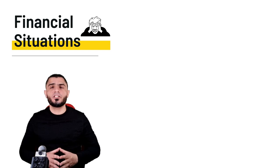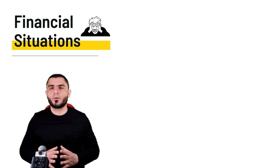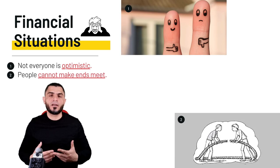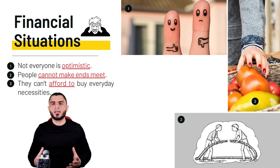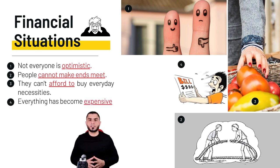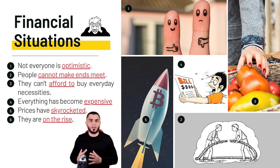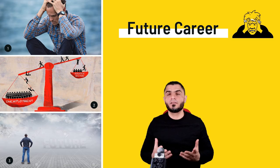Let's elaborate more on these different issues. Here in Tunisia, for example, people are concerned about their financial situations. People cannot make ends meet, afford to buy their everyday necessities, or own a house because everything has become expensive — prices have skyrocketed and have been on the rise. Their household income is not enough to cover unexpected medical emergencies, pay monthly bills, or their children's school fees.